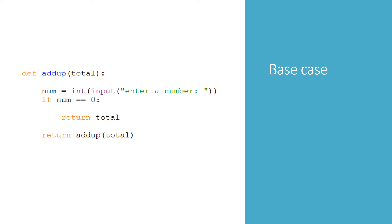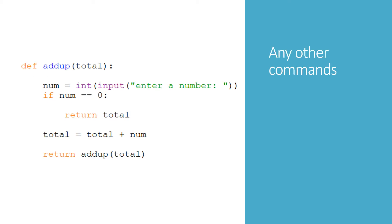Our function is nearly complete. There's only one more line we've got to add — whatever commands will make the function work. In this case, the function works by adding numbers to a total. So I've added one further line: total equals total plus num, the number entered by the user. That's the recursive function to add up a series of numbers entered by the user.